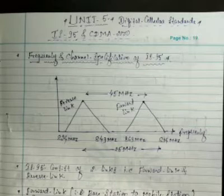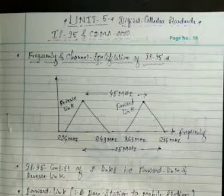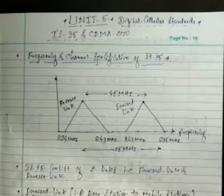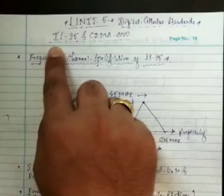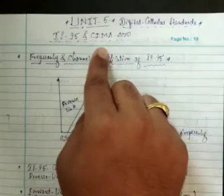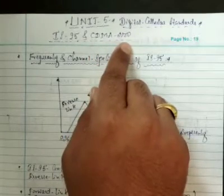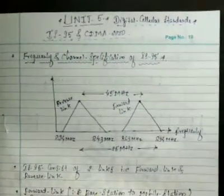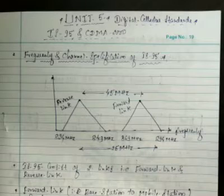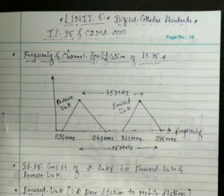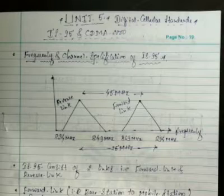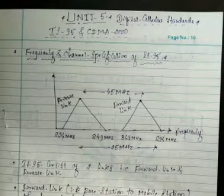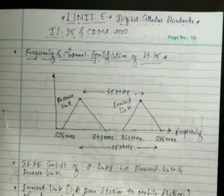Today we'll start Unit 5: Digital Cellular Standards — IS-95 and CDMA 2000. IS stands for Interim Standard 95, and CDMA stands for Code Division Multiple Access 2000. These are the two standards under digital cellular standards. We will cover two points: frequency and channel specification of IS-95, and the forward and reverse channels of IS-95.